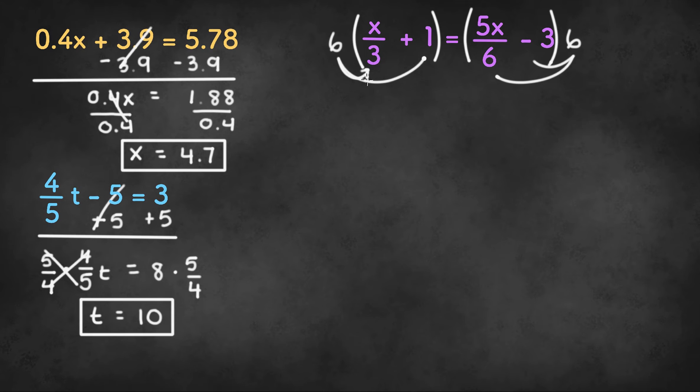6 times x divided by 3 is 6x divided by 3, which reduces to 2x. 6 times 1 is 6. And on the right hand side, we have 6 times 5x divided by 6. The 6 cancels out, so we are left with 5x and then negative 3 times 6, which is negative 18.